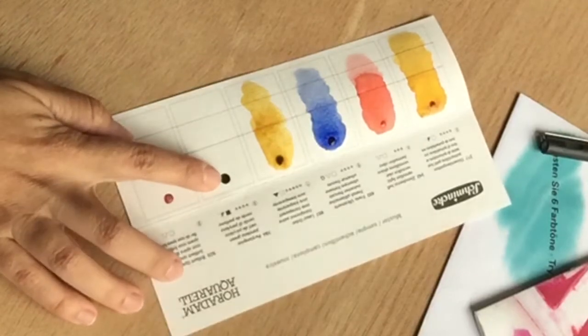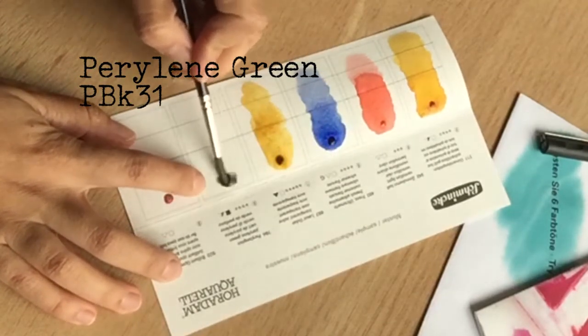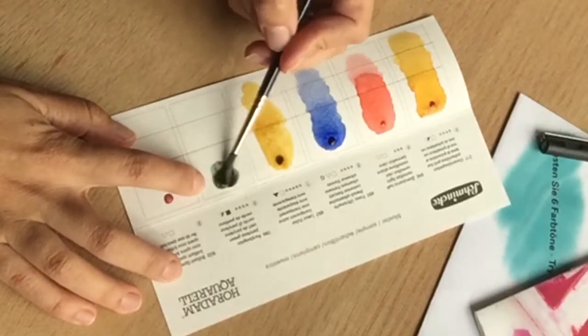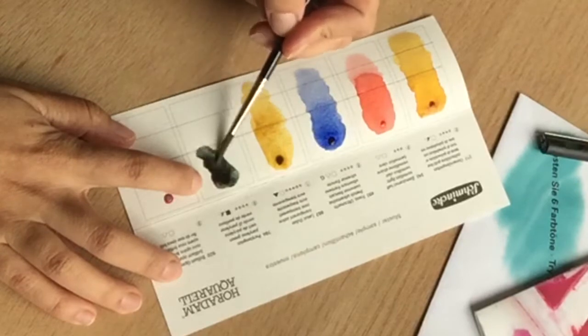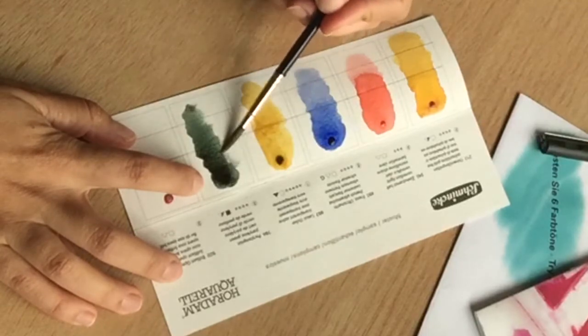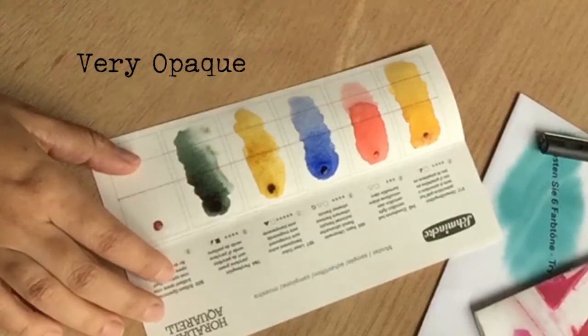Next is the Perylene Green. Oh, this is so dark. How it moves very nicely.